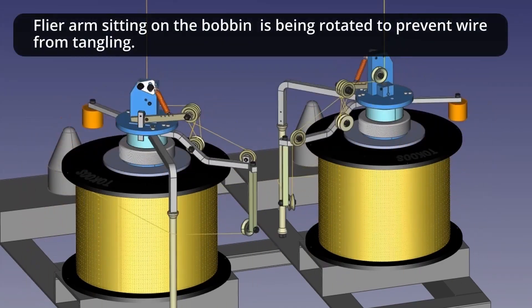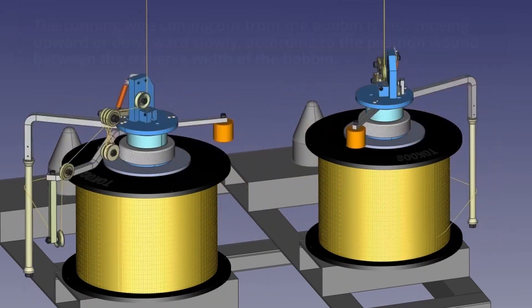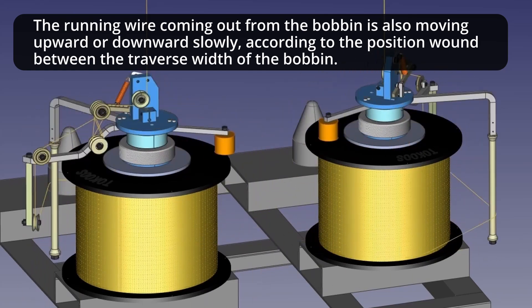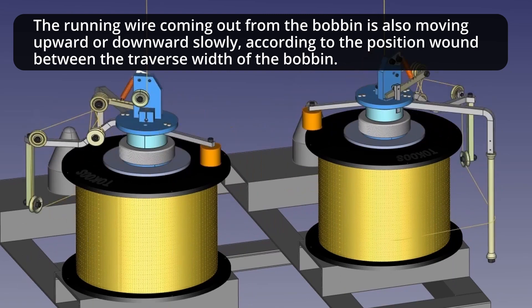Flyer arm sitting on the bobbin is being rotated to prevent wire from tangling. The running wire coming out from the bobbin is also moving upward or downward slowly, according to the position wound between the traverse width of the bobbin.